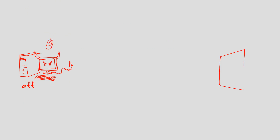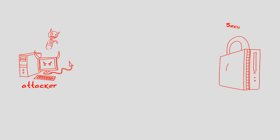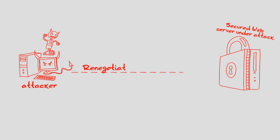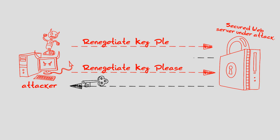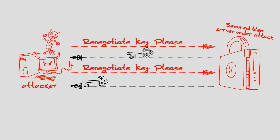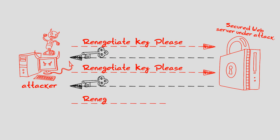The attack tool THC-SSL-DOS exploits a weakness in the SSL protocol that allows either side to renegotiate the connection keys, resulting in repetition of the handshake process. Attacks generated by the THC-SSL-DOS tool request to renegotiate the session key hundreds of times per second.